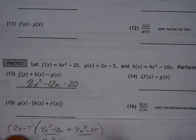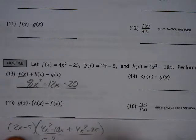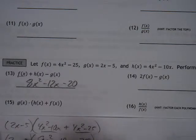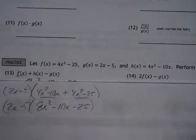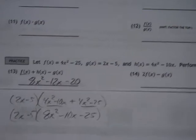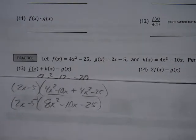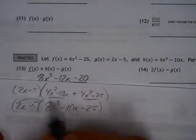You're going to combine those together first because of the parentheses. So you really have an 8x squared, a minus 10x, and a minus 25. All of that, then, is being multiplied by g of x, which is the 2x minus 5. Now, you can create a box to do this, or you can just simply go through the process of your turbofoil.